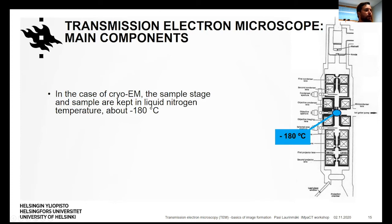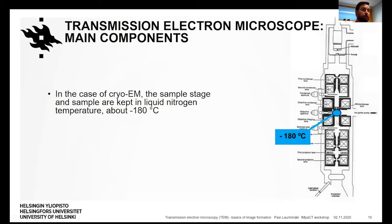In the case of cryo-EM, the sample stage and sample are kept at liquid nitrogen temperature during imaging — about minus 180 degrees Celsius. This is the main difference compared to traditional transmission electron microscopy of room-temperature specimens. When we move to cryo-electron microscopy, the key is that the sample has to be kept at liquid nitrogen temperature all the time, and the microscope has to be specially equipped with a cryo-sample holder that keeps the sample at liquid nitrogen temperature during imaging.